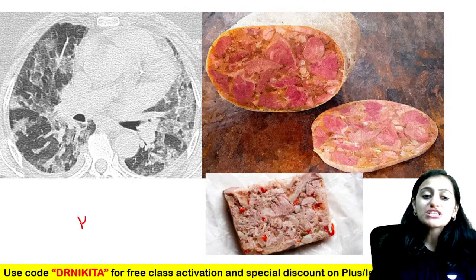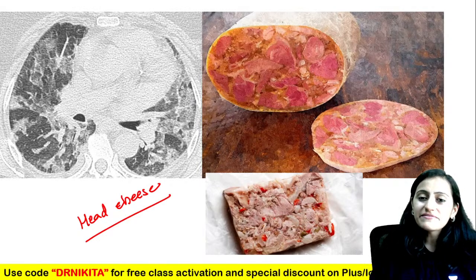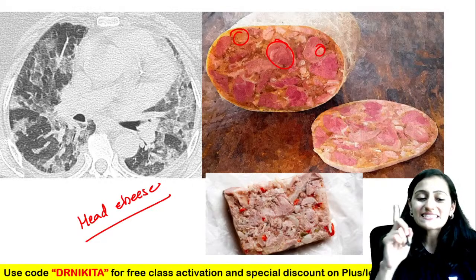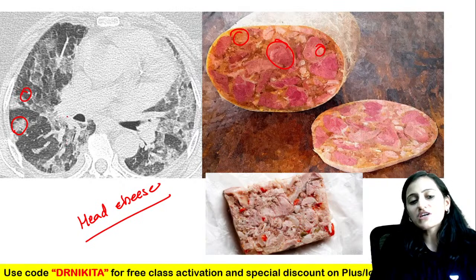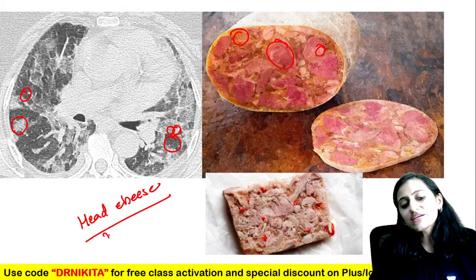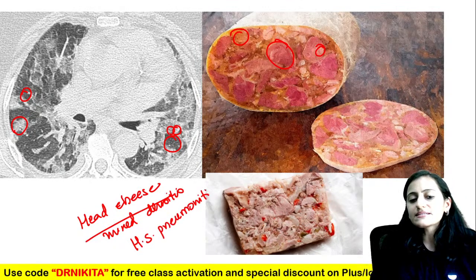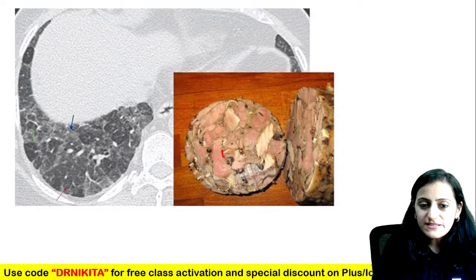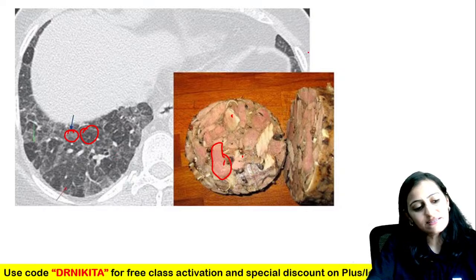The head cheese appearance — head cheese is a meat, not a cheese, with dark areas, light areas, and very light areas alternating. On HRCT chest, you see areas that are white, gray, and black — all mixed densities together — that is head cheese appearance. This is seen with hypersensitivity pneumonitis.